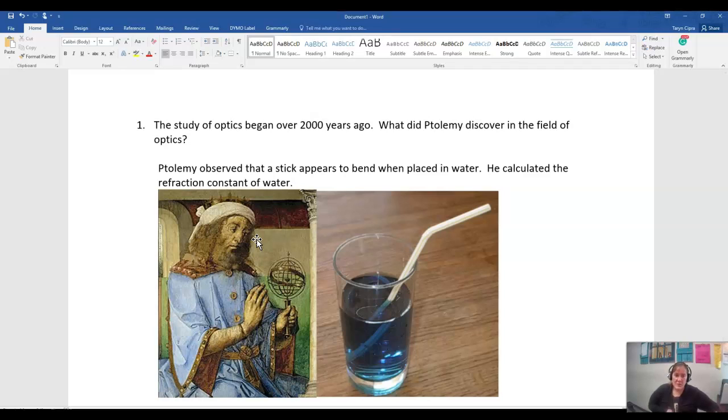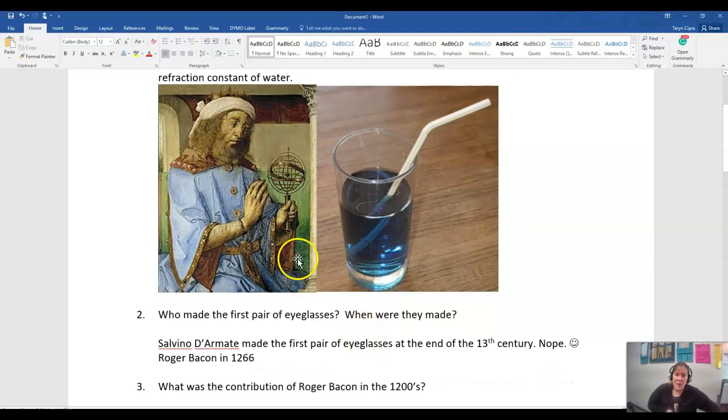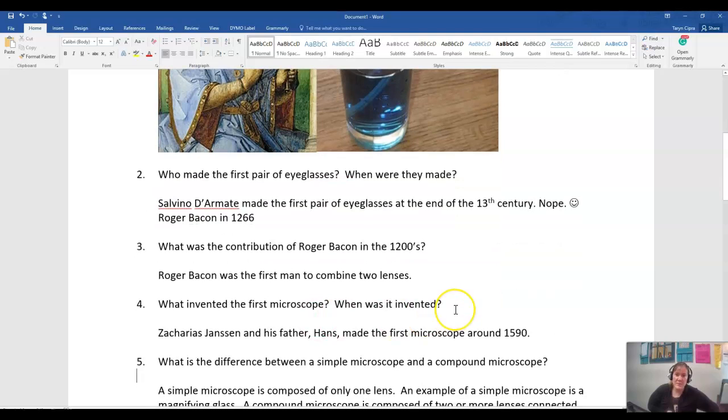When placed in a different substance, light travels at different speeds through different substances, making the straw look broken or a stick look bent. This was important because he was able to calculate the refraction constant of water from that, giving a better understanding of how light moves through different substances.